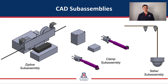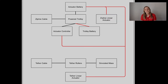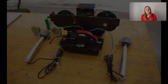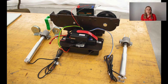The zipline subassembly consists of the commercial off-the-shelf powered trolley and the 316 stainless steel cable. The clamp subassembly is composed of linear actuators and required components such as the control system and battery, and allows the trolley to be fixed in place and the payload held at a constant height. The tether subassembly consists of rollers to guide the tether from the attachment point down to the payload, the 316 building wire, and the rover simulator. This architecture diagram shows how all components of each subsystem interface with each other, and this image shows the physical realization of that architecture.